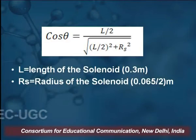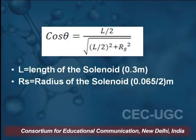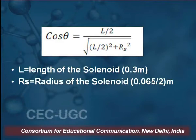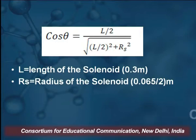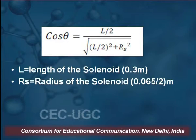Similarly, we can find cosθ as L/2 divided by the square root of (L/2)² plus Ra², where L is the length of the solenoid, fixed at 0.3 meter, and Rs is the radius of the solenoid, also given and customized with the experiment.